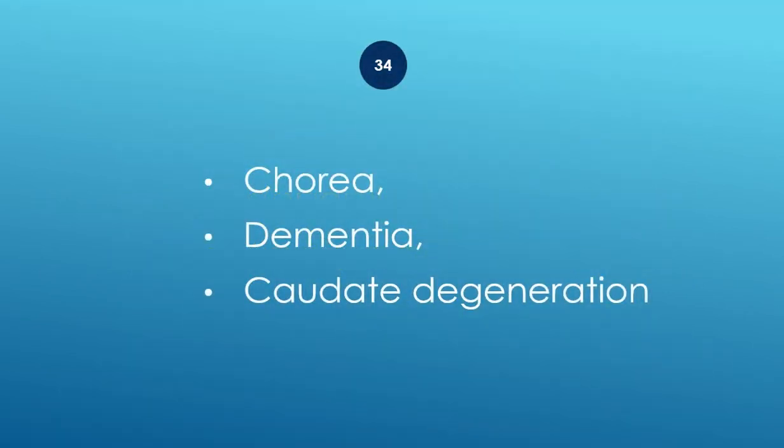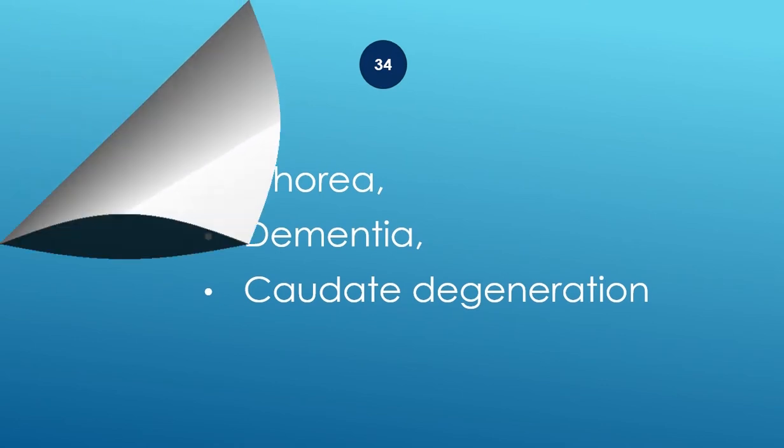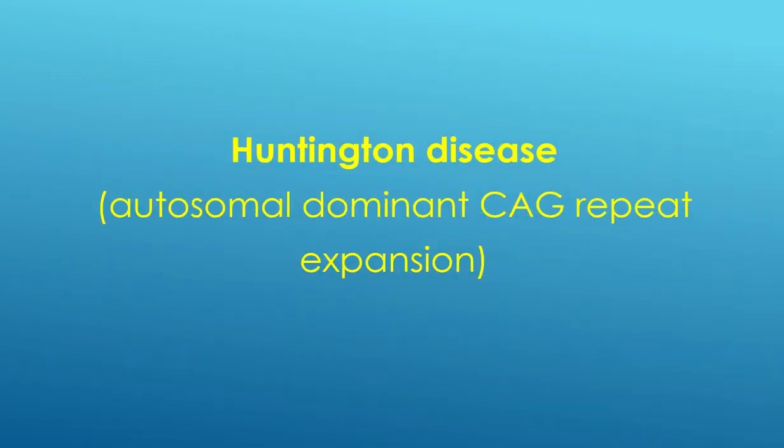Chorea, dementia, and caudate degeneration — Huntington disease. Autosomal dominant CAG repeat expansion.